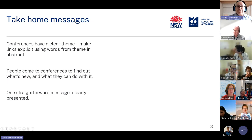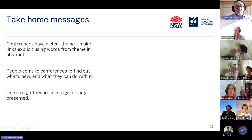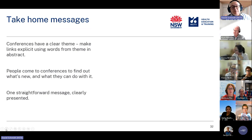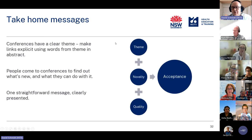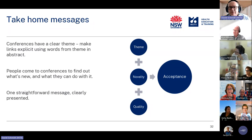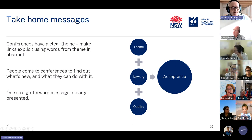The take-home messages: conferences have a clear theme, so use words from that theme in your abstract to make alignment explicit. People come to conferences to find out what's new and what they can do with it, so have one straightforward message clearly presented. Think back to what leads to acceptance — theme fit, novelty, and quality.